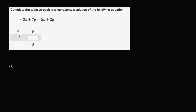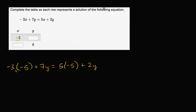We get negative three times negative five, plus seven y, is equal to five times negative five, plus two y. So negative three times negative five is positive 15, plus seven y is equal to negative 25 plus two y.